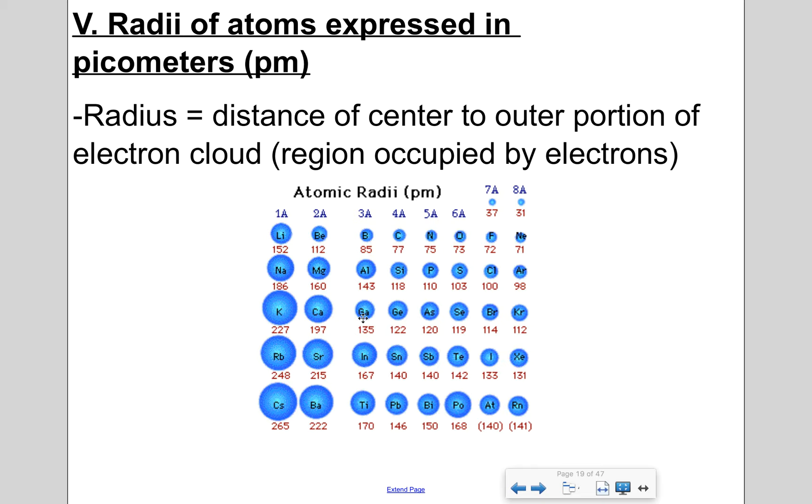Final slide. Radii of atoms is expressed in picometers or PM. So the radius by definition is the distance of the center to the outer portion of the electron cloud, basically the end of the electrons. So that is the radius of an atom.